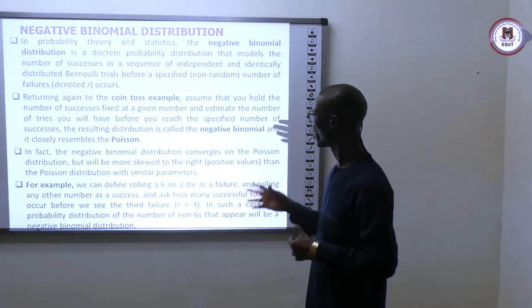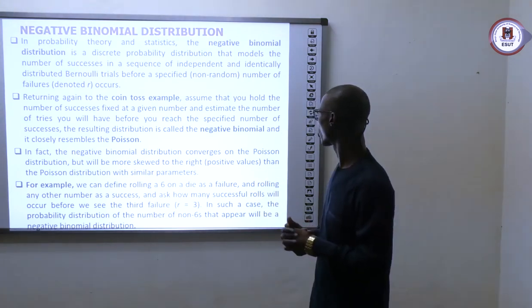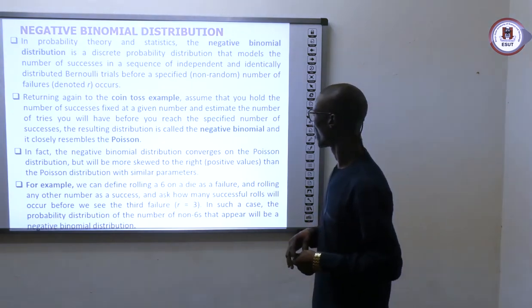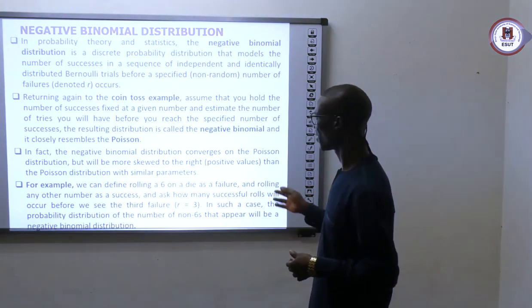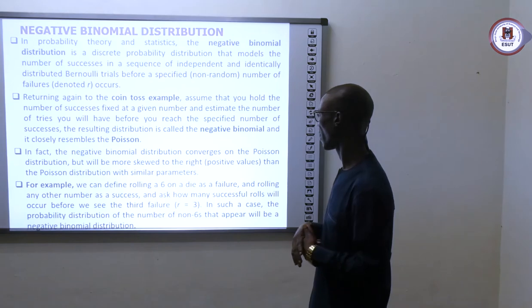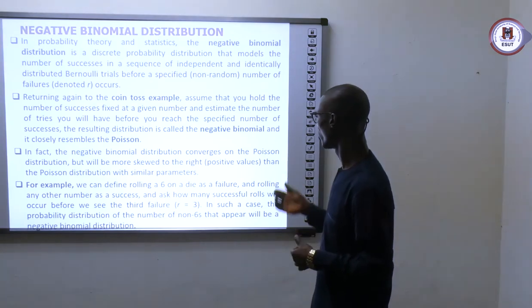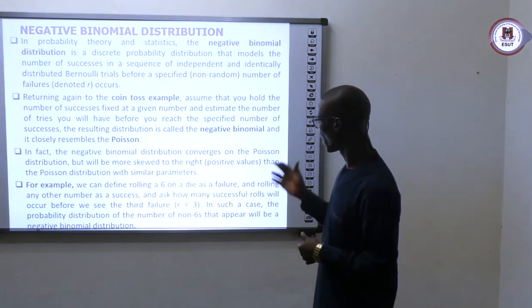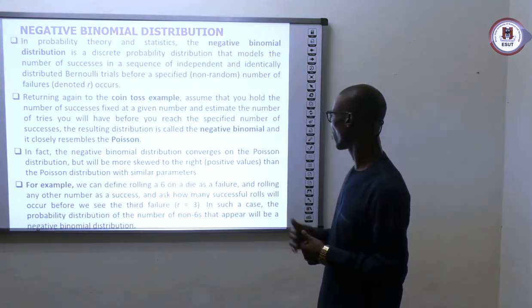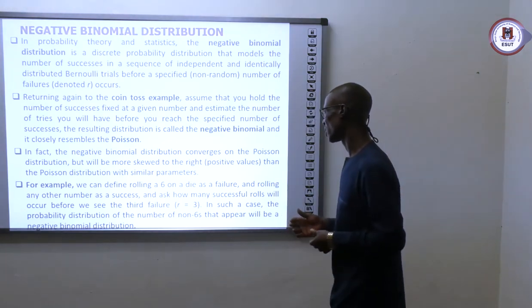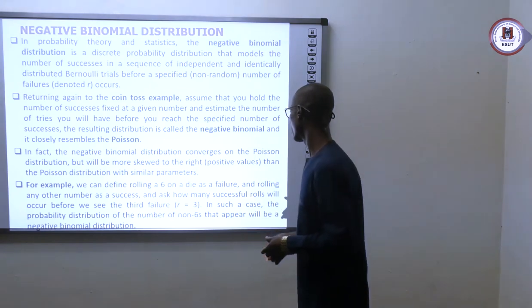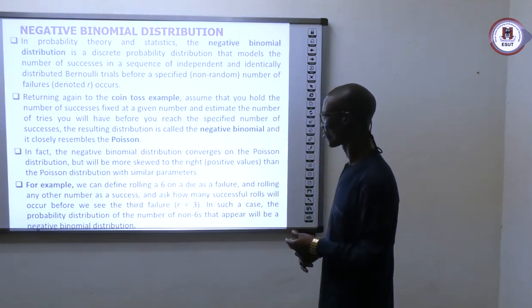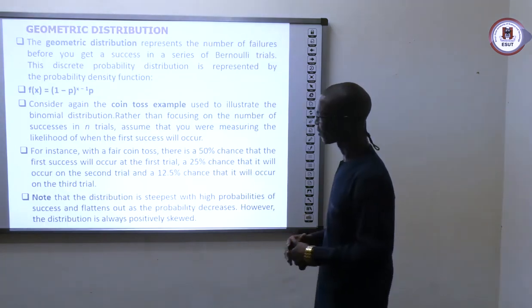Returning to the coin tossing example: assume that you have the number of successes fixed at a given number and estimate the number of failures you will have before you reach that specific number of successes. The resulting distribution is negative binomial. For you to have the negative distribution, you have one minus the positive distributions.